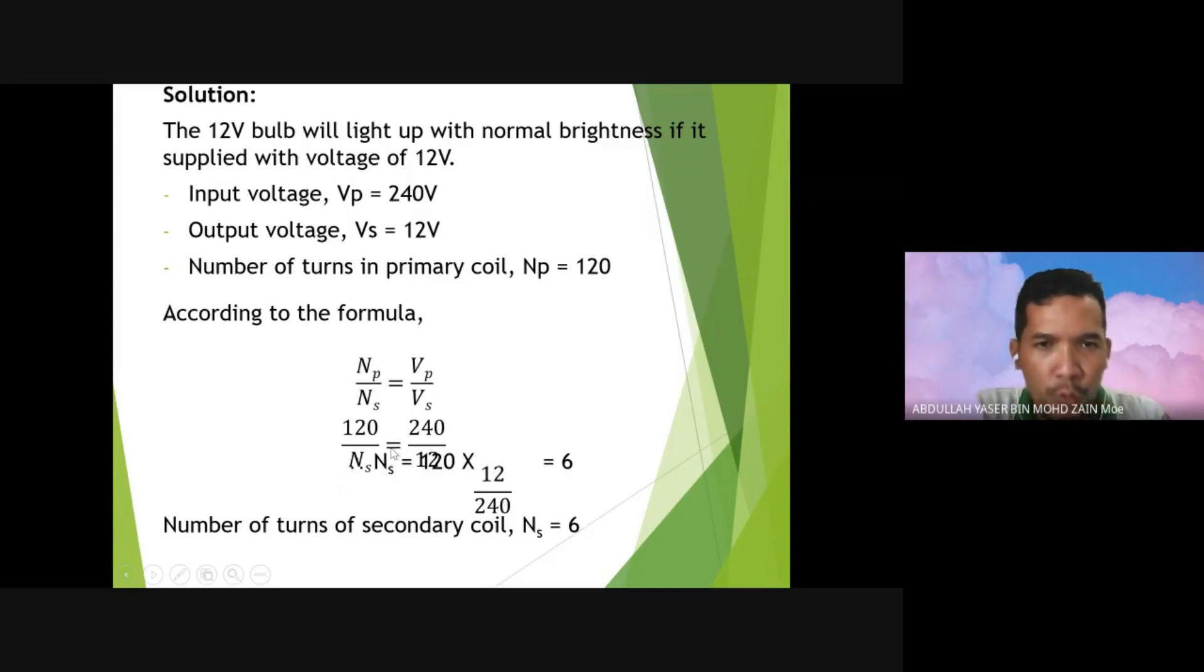120 per NS equals 240 per 12 volts. So NS equals 120 times 12 per 240. The answer, when we calculate this one, we will get 6. So the number of turns in secondary coil, NS equals 6. That is how we are using the formula to solve the problem.